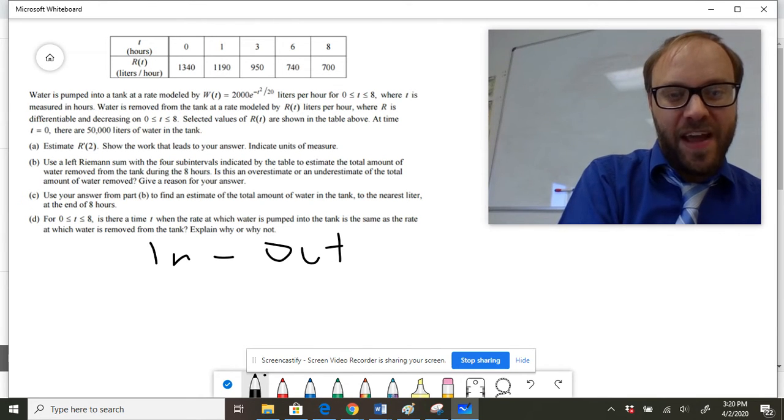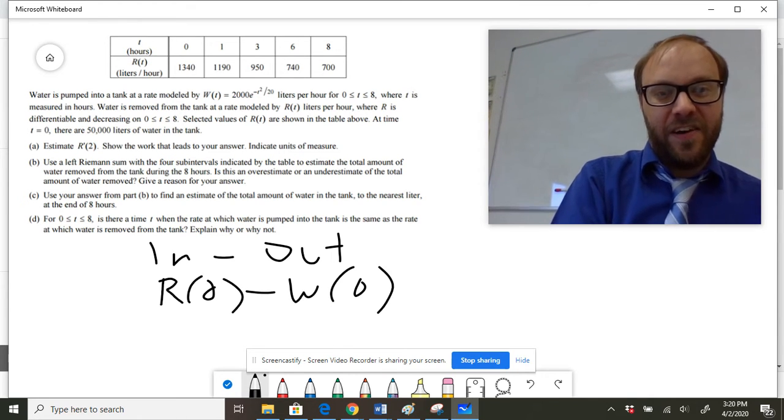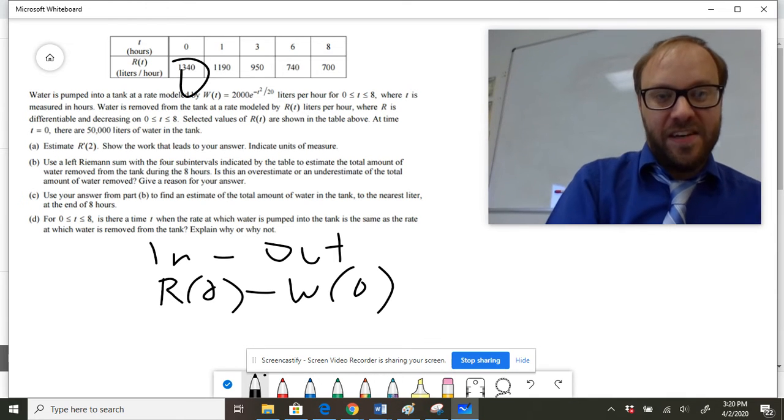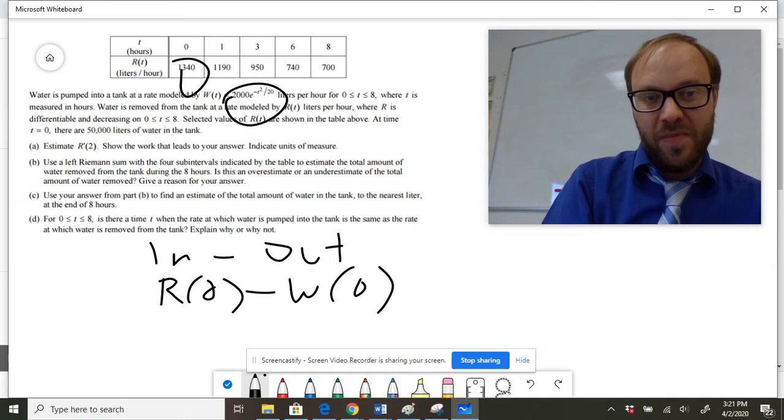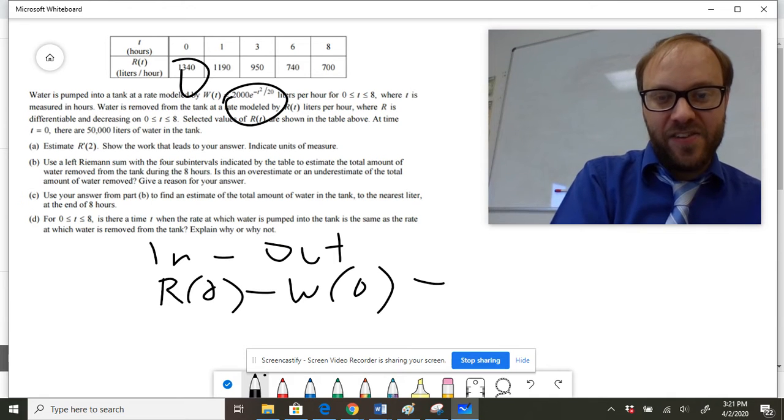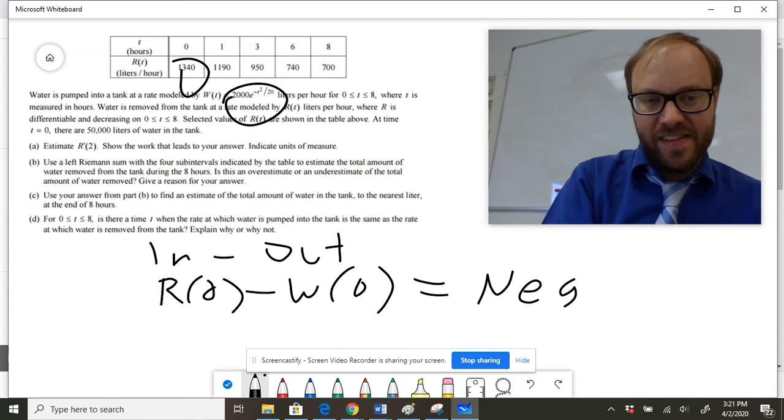So if you want to know how fast the water's rate is changing overall at the start, you can take R of zero, and you can subtract W of zero. And if you look here, R of zero is 1340. W of zero, if you substitute that equation up there is going to be 2000. And so that initial rate is going to be negative, and it's going to be dropping, I think it's negative 660.